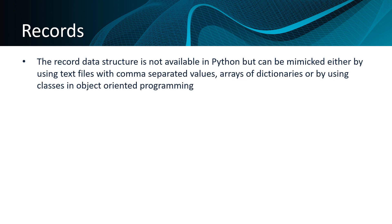The record data structure is not available in Python but can be mimicked either by using text files with comma separated values, arrays of dictionaries, or by using classes in object-oriented programming. You still need to be aware of it even if you're studying Python because the theory could be tested in the exams.